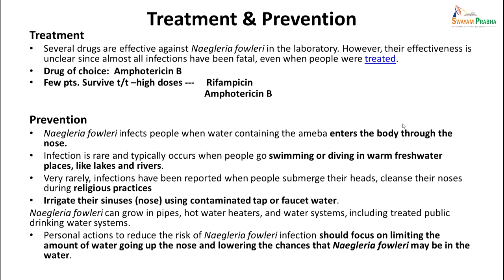Treatment: several drugs are effective against Naegleria fowleri in the lab; however, effectiveness in vivo is unclear since almost all infections have been fatal. The drug of choice is amphotericin B, and a few patients have survived treatment with high doses. Prevention includes avoiding warm fresh water lakes and poorly maintained swimming pools, and not irrigating the nose with untreated or unhygienic water. Limiting the entry of these amoeba through the nose is the only way to prevent infection, as they are difficult to treat.